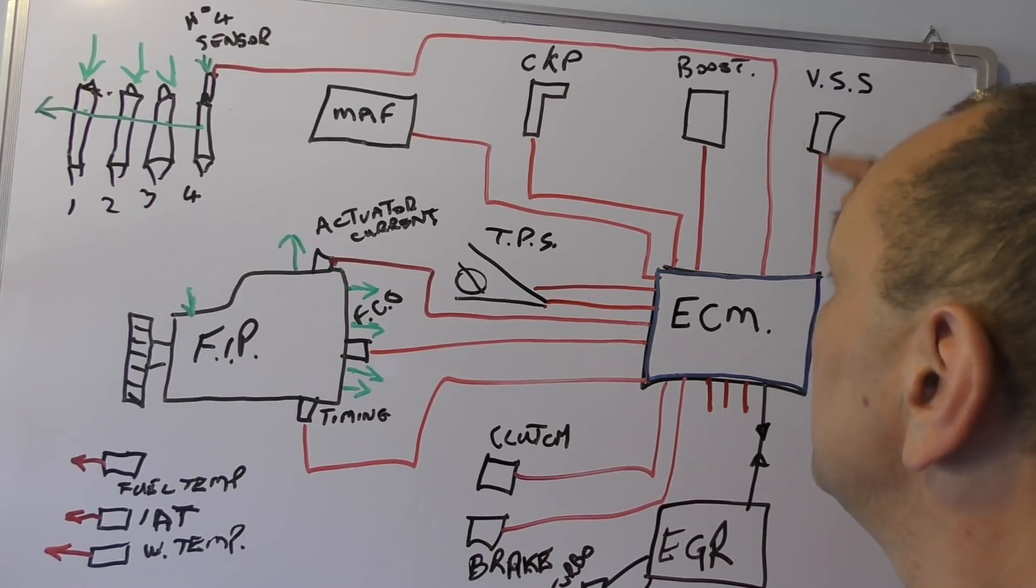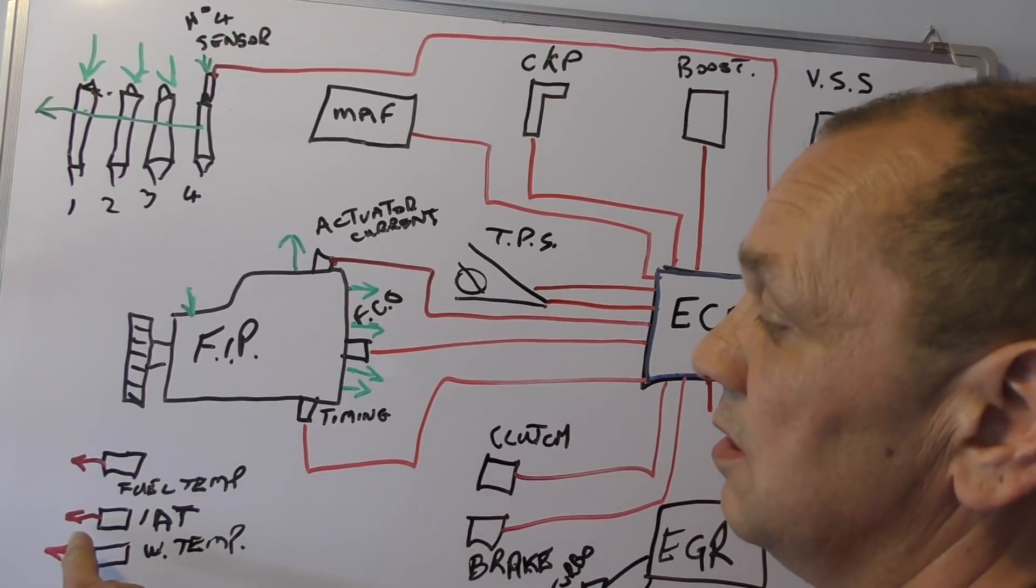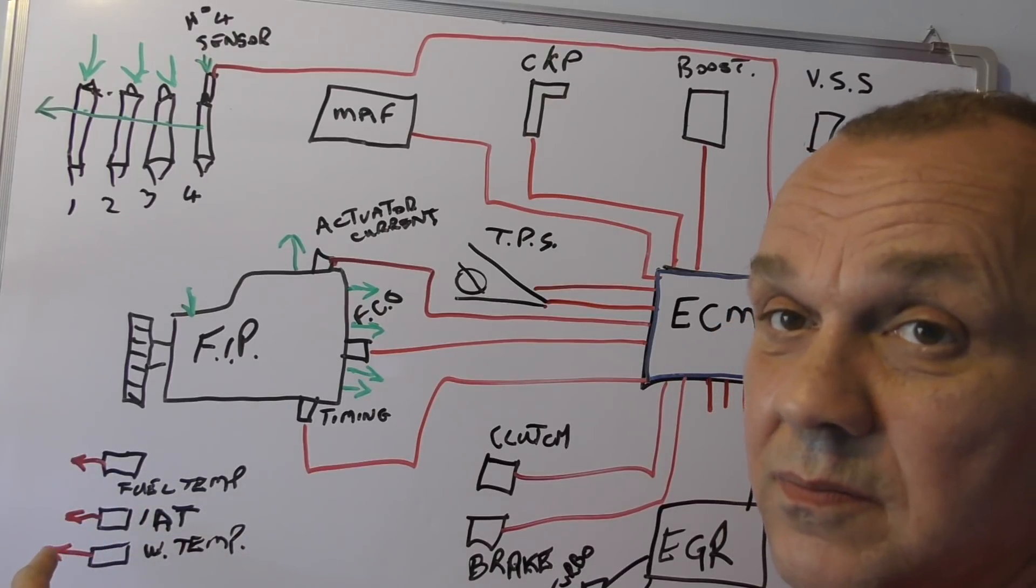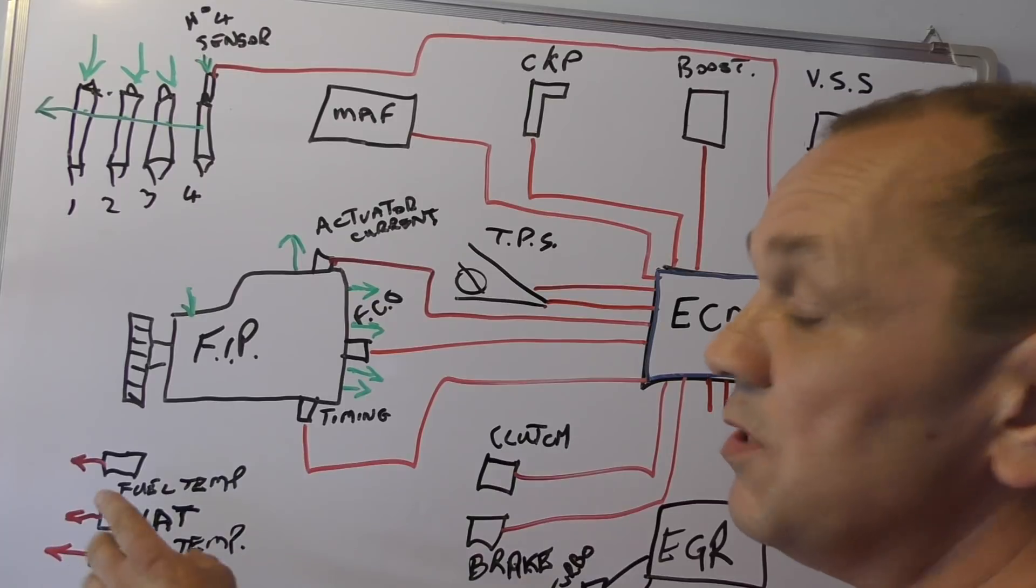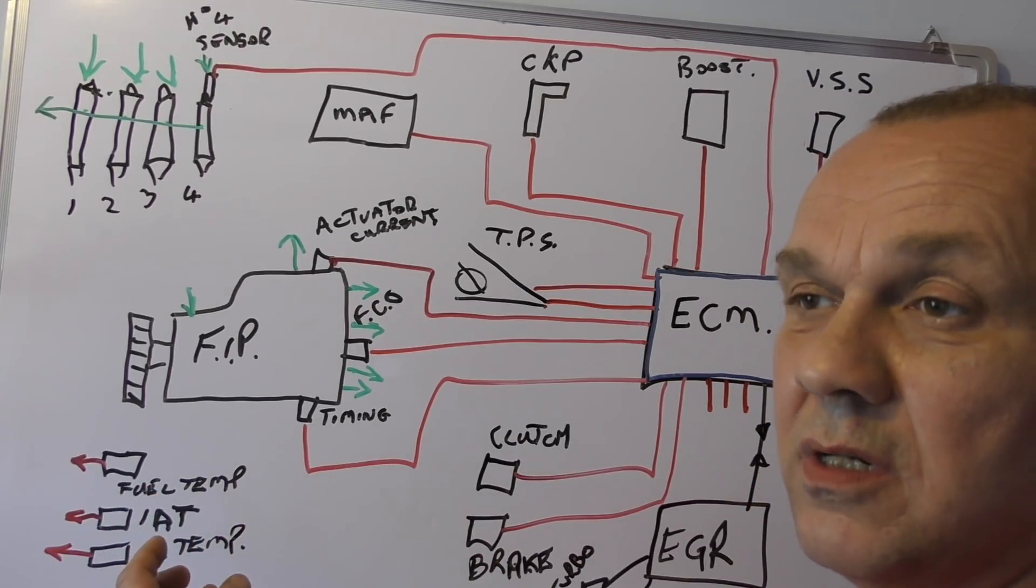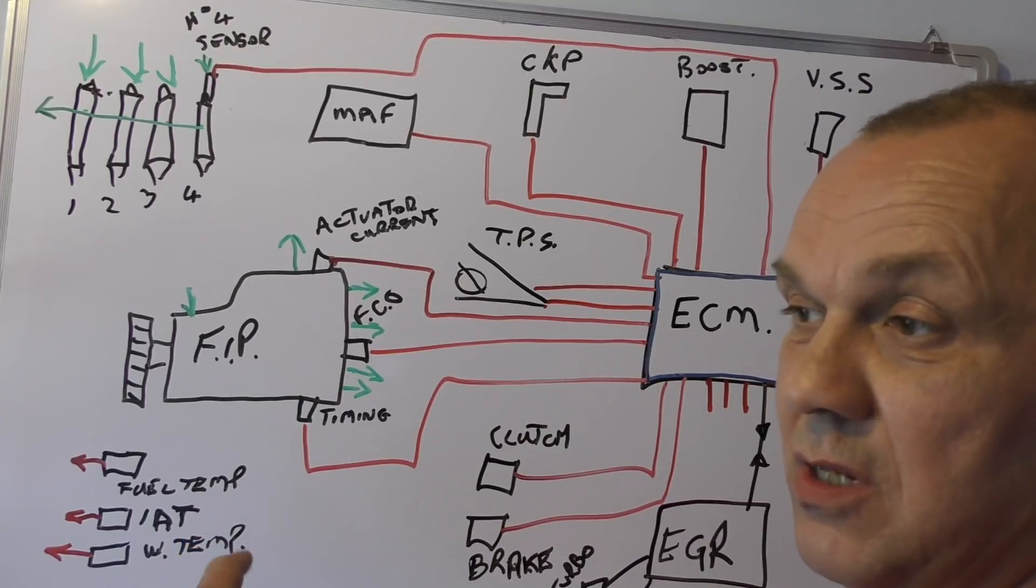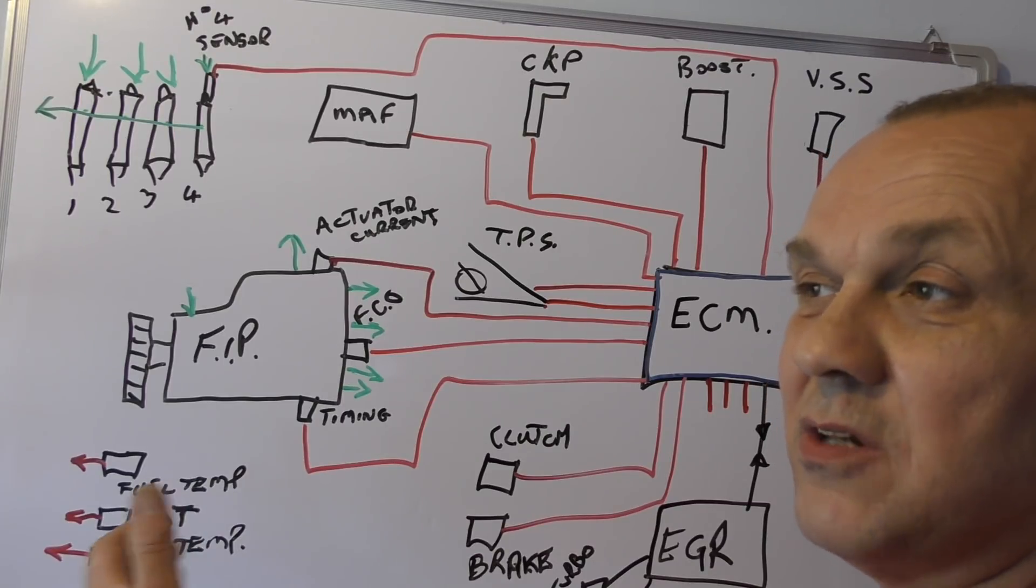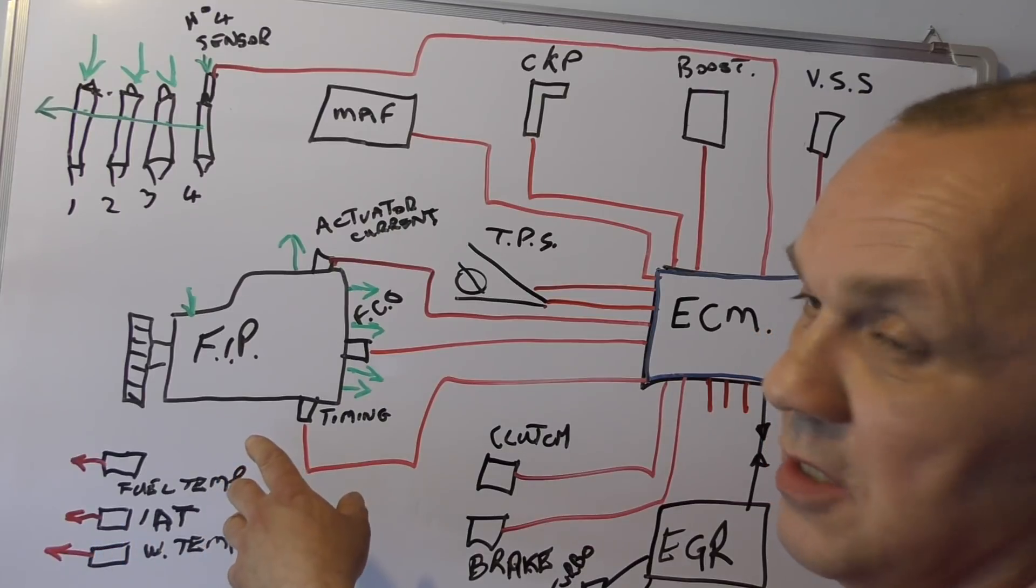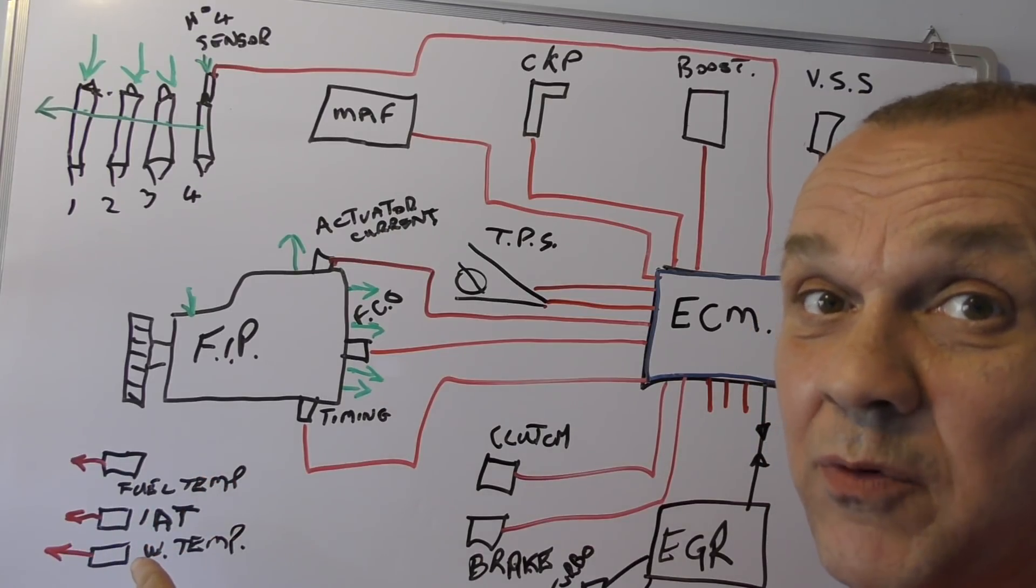It wants to know how fast the vehicle is actually going, so it needs a vehicle speed sensor as well, okay? It also monitors fuel temperature, air temperature coming in, yeah, and water temperature. The reason for this is it adjusts for fuel quality. What I mean by that is that when fuel gets warmer, it changes viscosity. So it wants to know its optimal usage by adjusting this pump depending on the quality of the fuel. This is where you get your power from, alright? Remember, this is pre-common rail, alright?